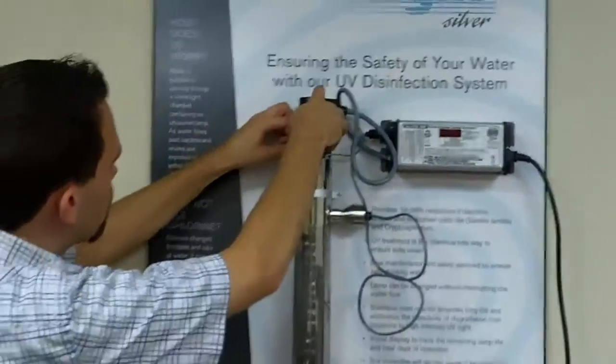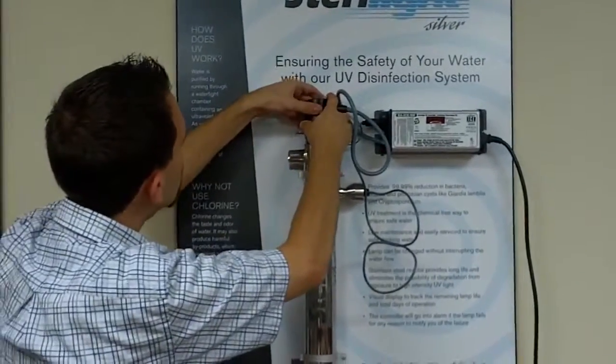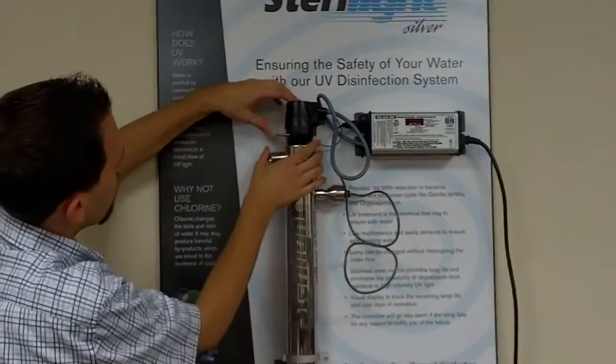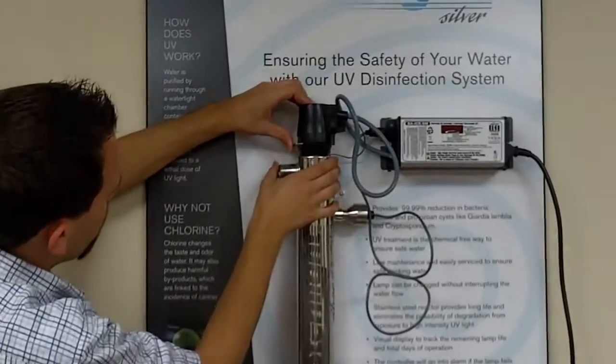And then we can go ahead and re-insert that lamp connector on top of the chamber. And then we just lock it in by pushing this clip all the way in.